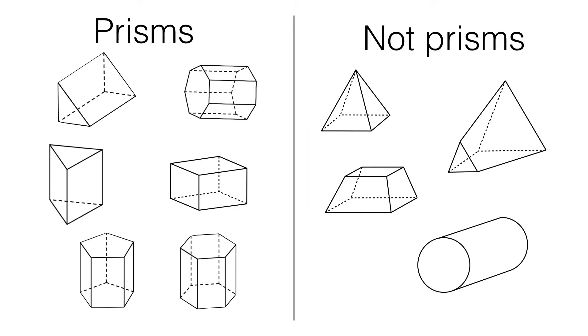Just to finish off, here are some examples of prisms and things that are not prisms. Here we have a triangular prism, you can see that we have a triangular cross-section.